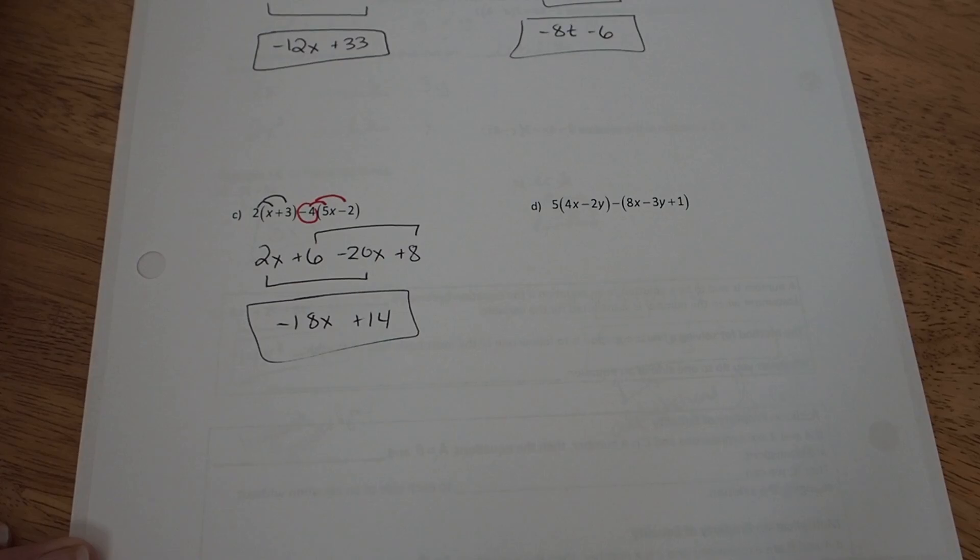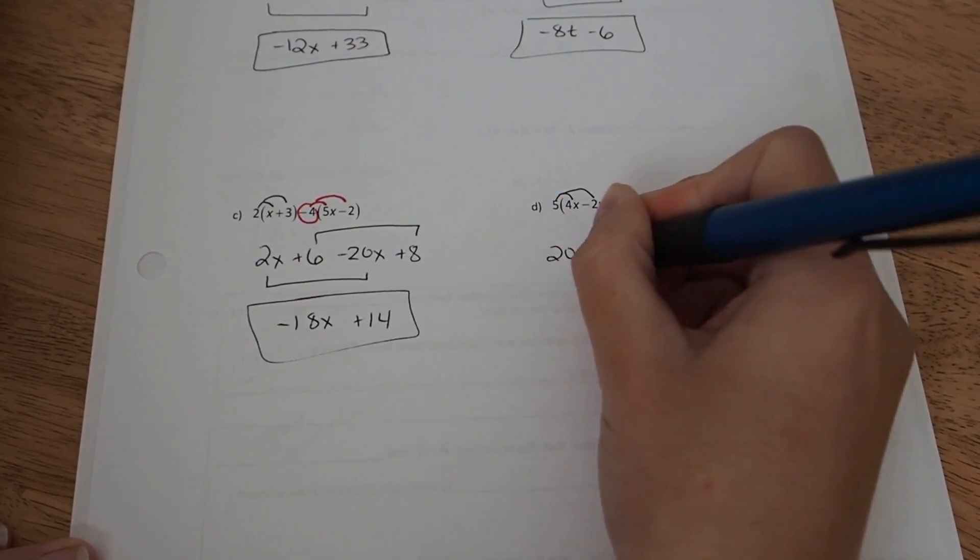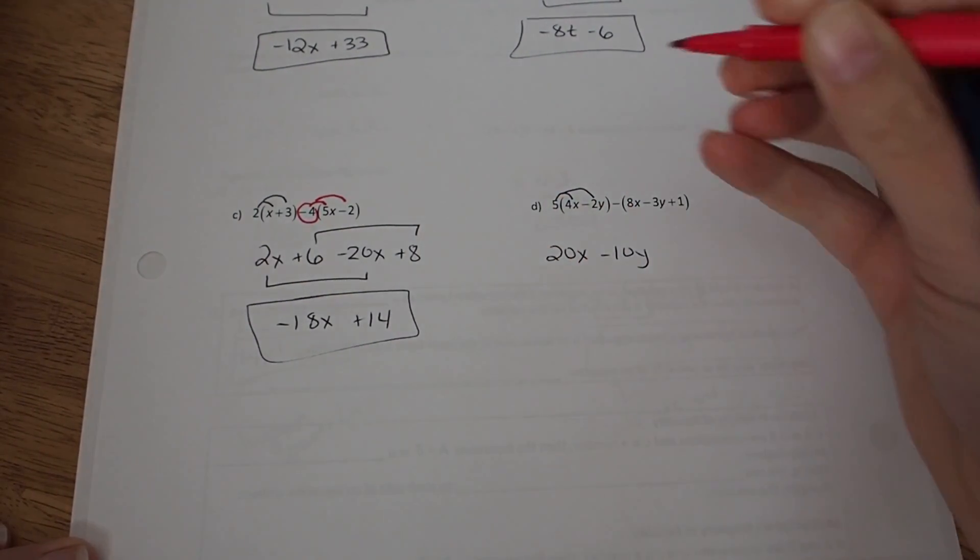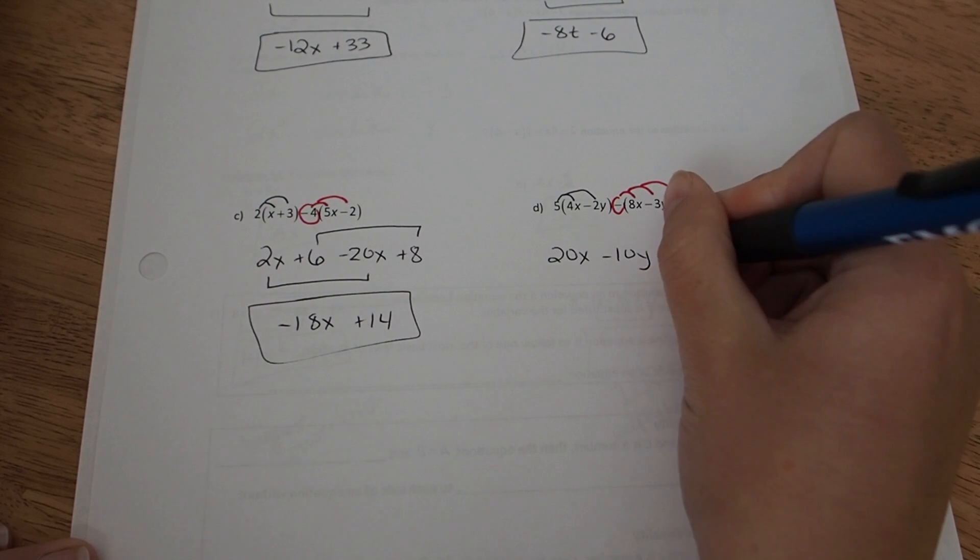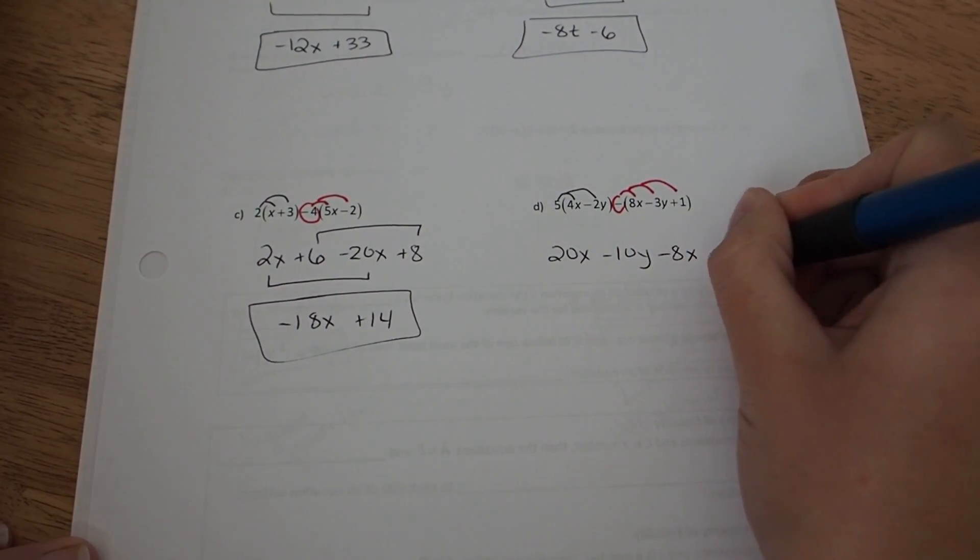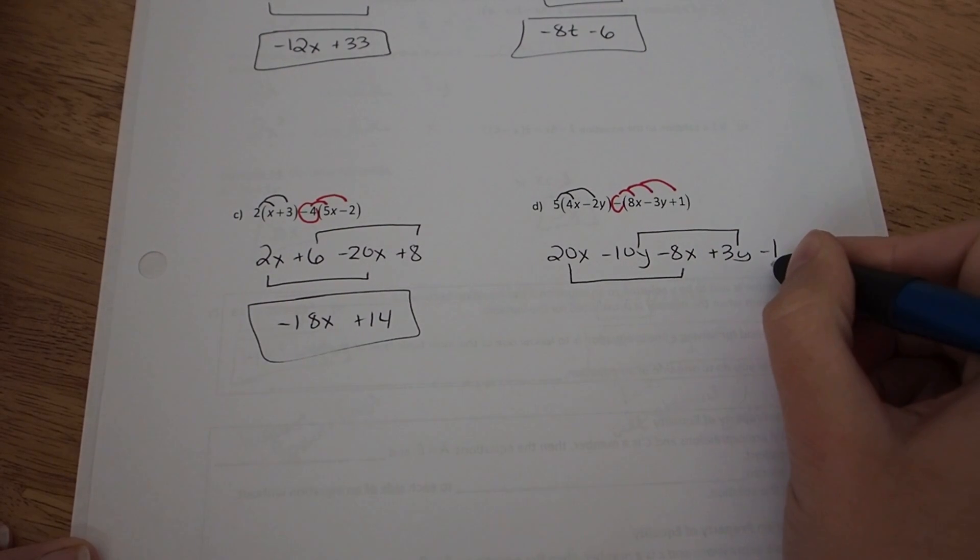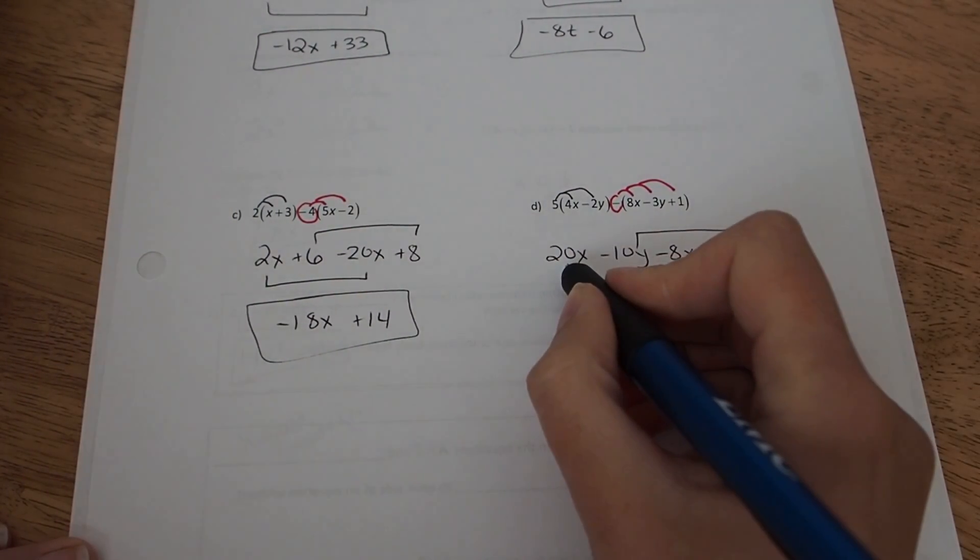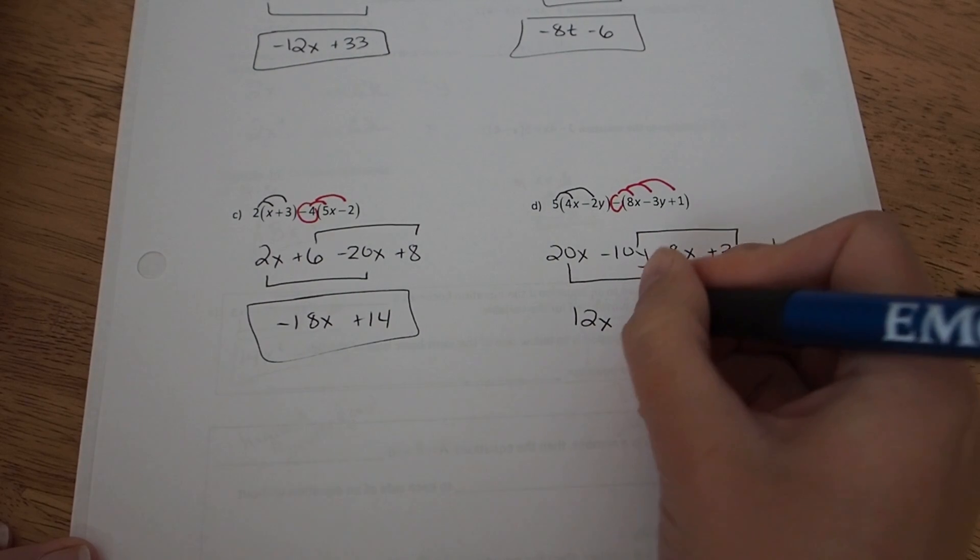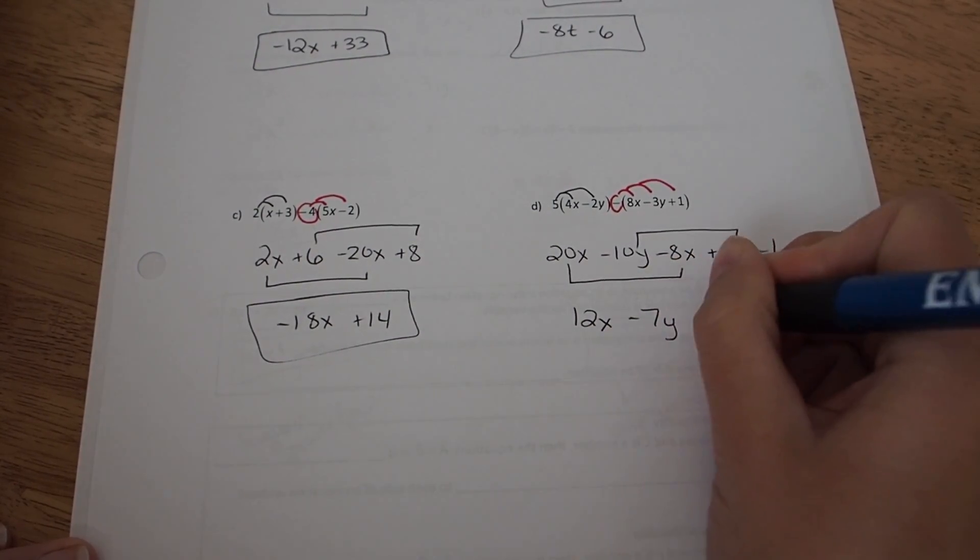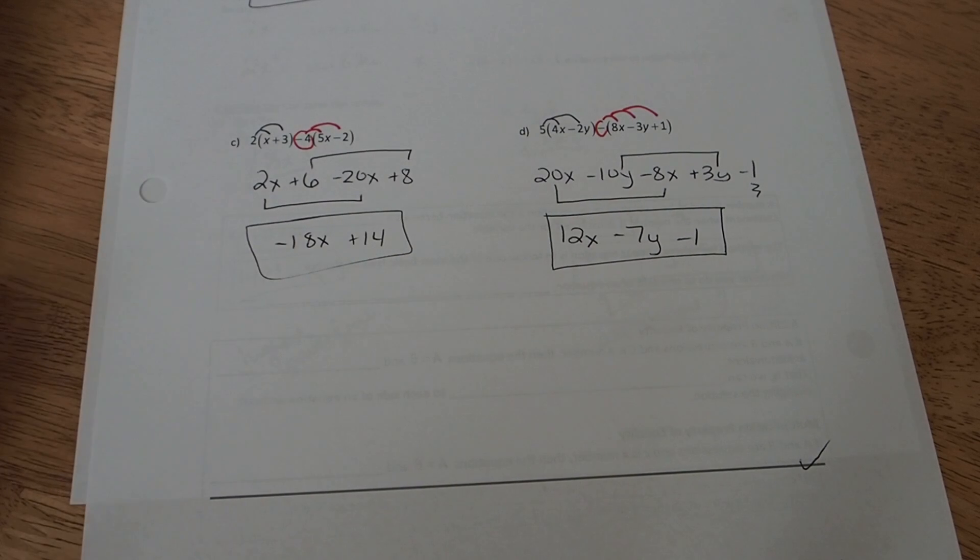Once again, two distributes. We're going to first distribute 5 to 4x into negative 2y. So 5 times 4x is 20x minus 10y. And then distribute just the negative. That's just going to be changing the signs of everything. So a negative and a positive makes that minus 8x. A negative and a negative makes that positive 3y. And a negative and a positive makes that minus 1. Combine your x's. Combine your y's. And this one again has something to combine with. So x is first. 20 minus 8 is going to be 12x. Negative 10 plus 3 is going to be negative 7y. And then minus 1 is still the constant. It was all alone. And this mark means that you have ended the section.